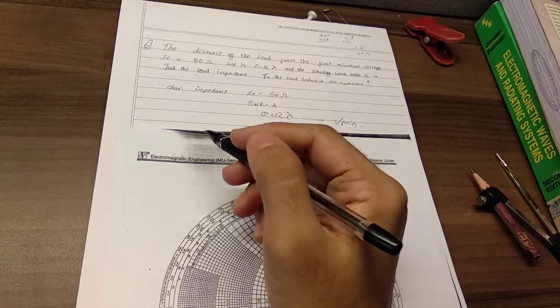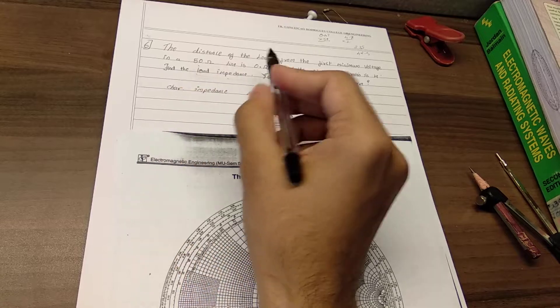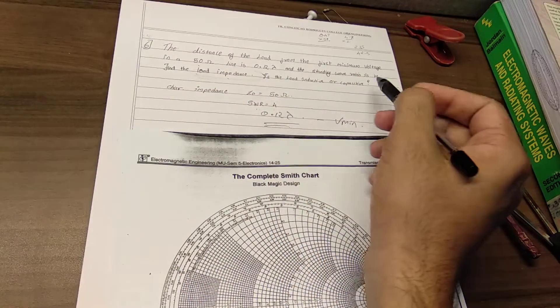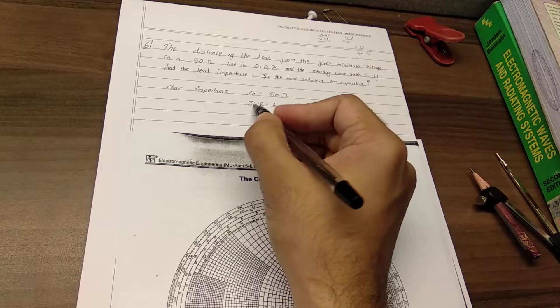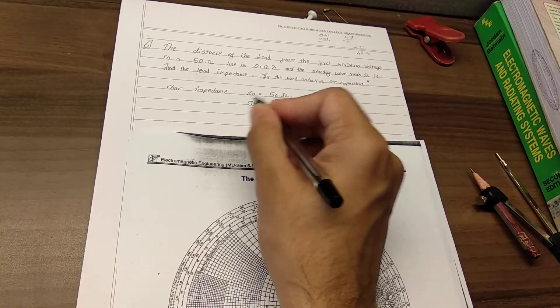Okay, so the question is the sixth question from the tutorial. 50 ohms characteristic impedance, 0.12 lambda, 4 is the standing wave ratio. So this is my 4, my standing wave ratio. Z0, the characteristic impedance, is 50 ohms.